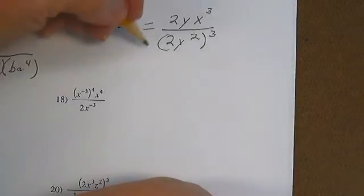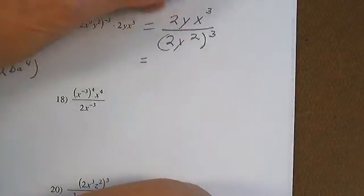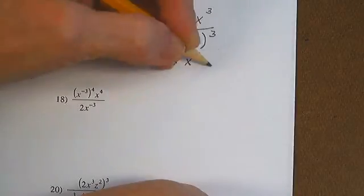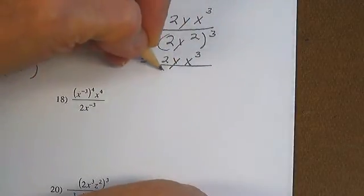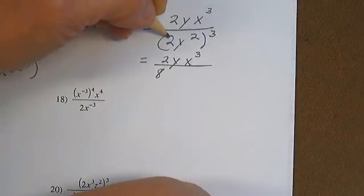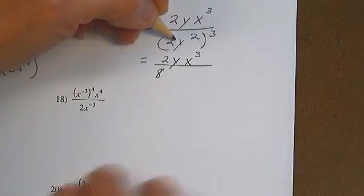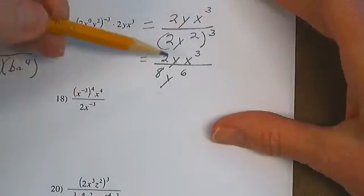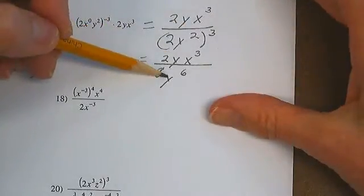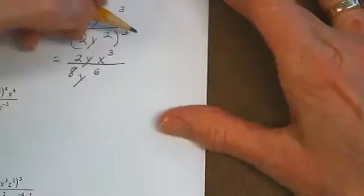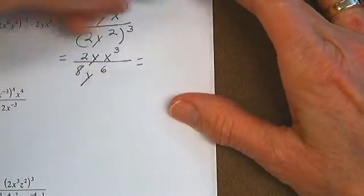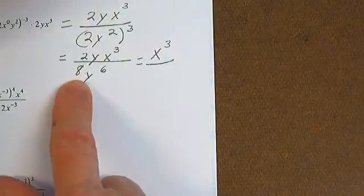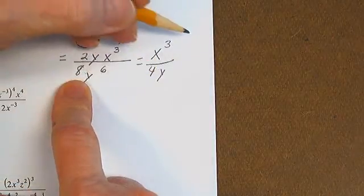That is going to be the same as 2y x cubed over 2 cubed, which is 8, times 2 times 2 times y to the 6th. Y divided by y to the 6th gives me a denominator of y to the 5th, so this will end up being x cubed over 4y to the 5th.